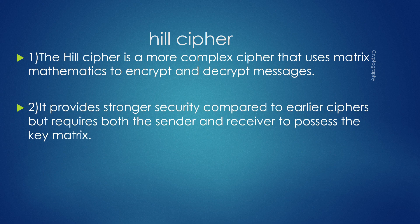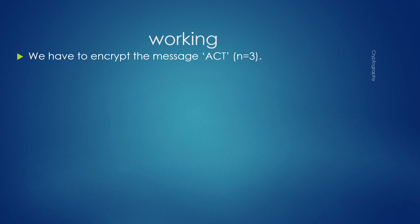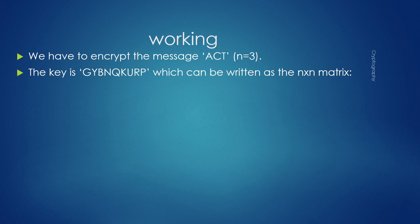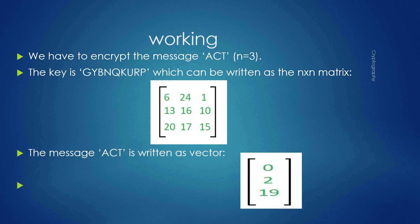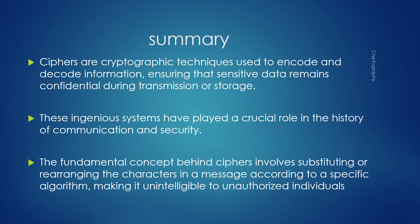The Hill cipher is a more complex cipher that uses matrix mathematics to encrypt and decrypt messages. It provides stronger security compared to the earlier ciphers, but requires both the sender and receiver to share the key matrix. Its complexity makes it resilient against many basic cryptanalysis techniques. The working involves matrix multiplication mod 26 to produce the ciphertext.